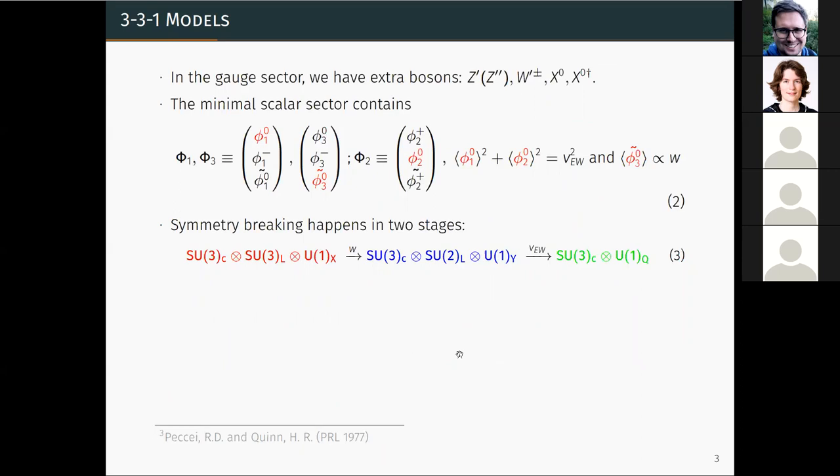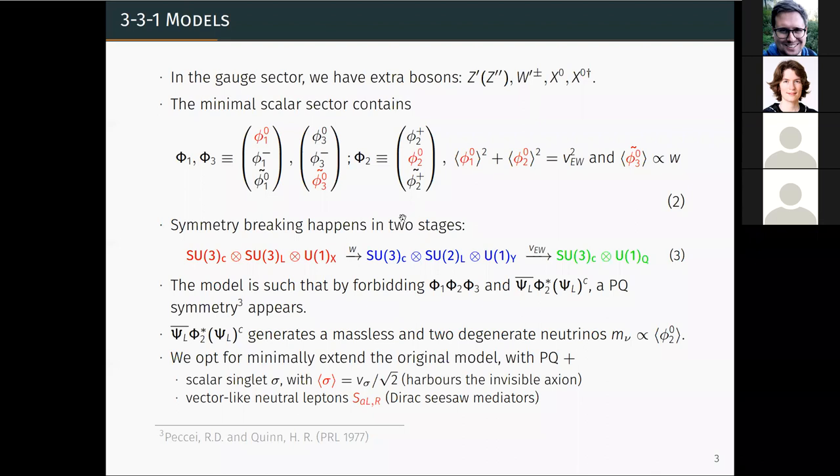And in this model, it's interesting that the B-L symmetry is already anomaly-free, so it can be promptly promoted to local. As we are talking about the gauge extension of the standard model, the gauge sector has new vector bosons, which are given by this. And for the scalar sector, we need at least three triplets to break the symmetry spontaneously, and also to generate mass for all the fermions in the model. So the symmetry breaking, as I was saying, the symmetry breaking pattern takes two stages, two different steps. First, this 3-3-1 gauge group is broken when the third component of phi-3 gets a VEV down to the standard model gauge group. And then when the first and the second components of phi-1 and phi-2 get a VEV, we break the standard model gauge group.